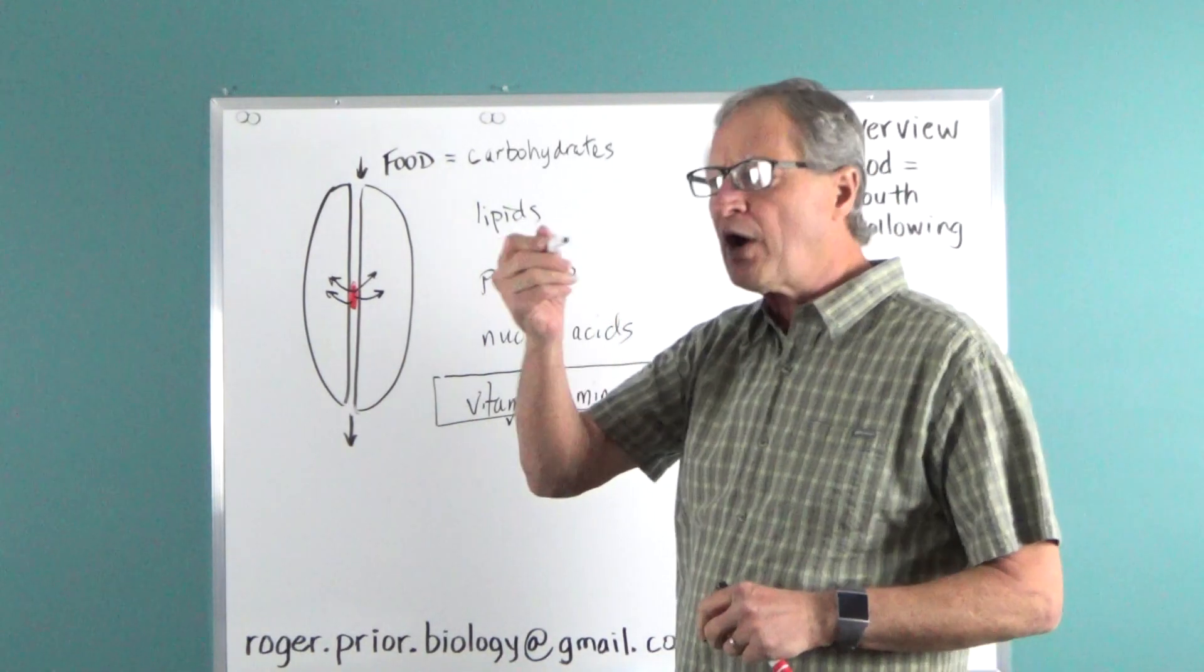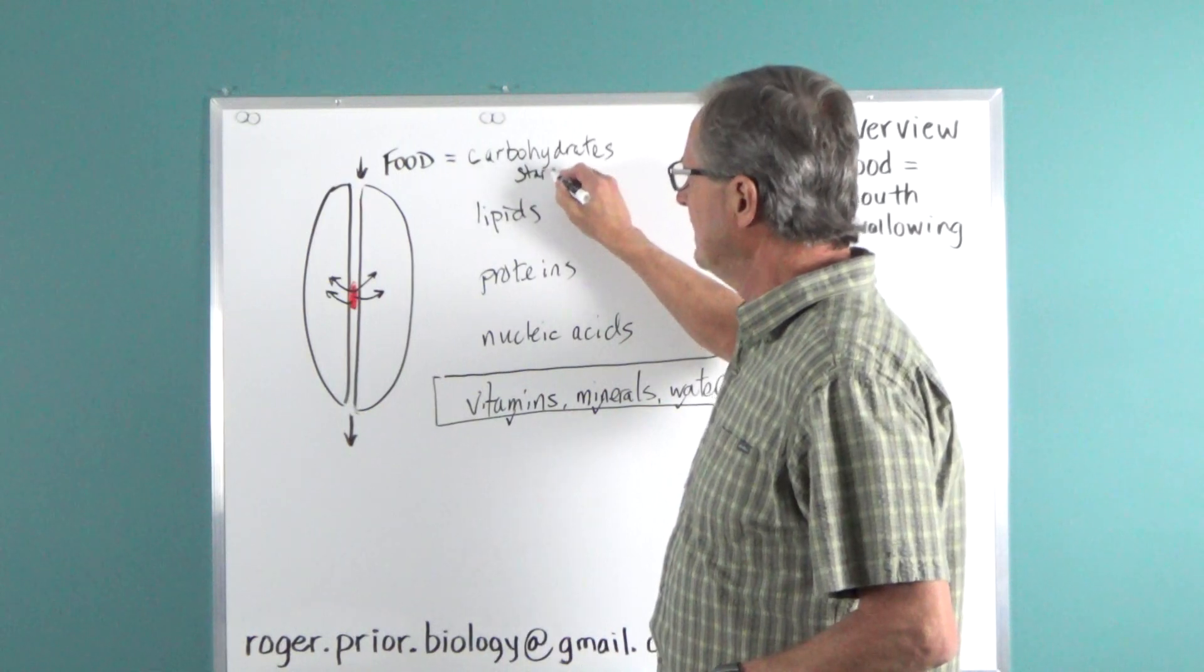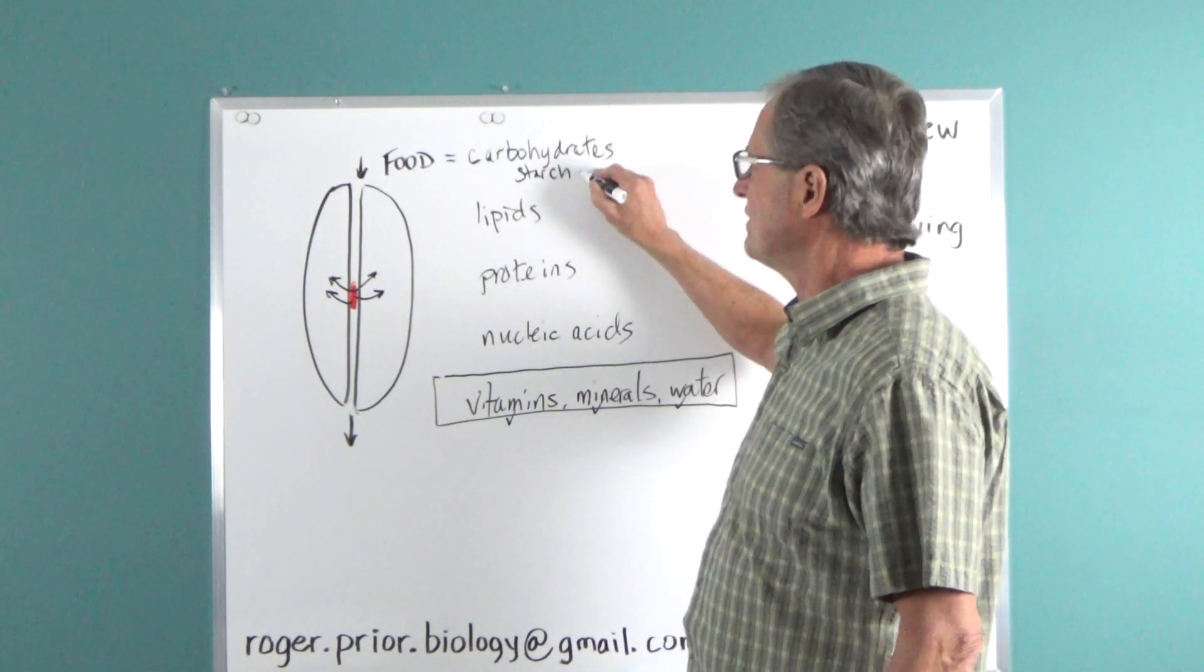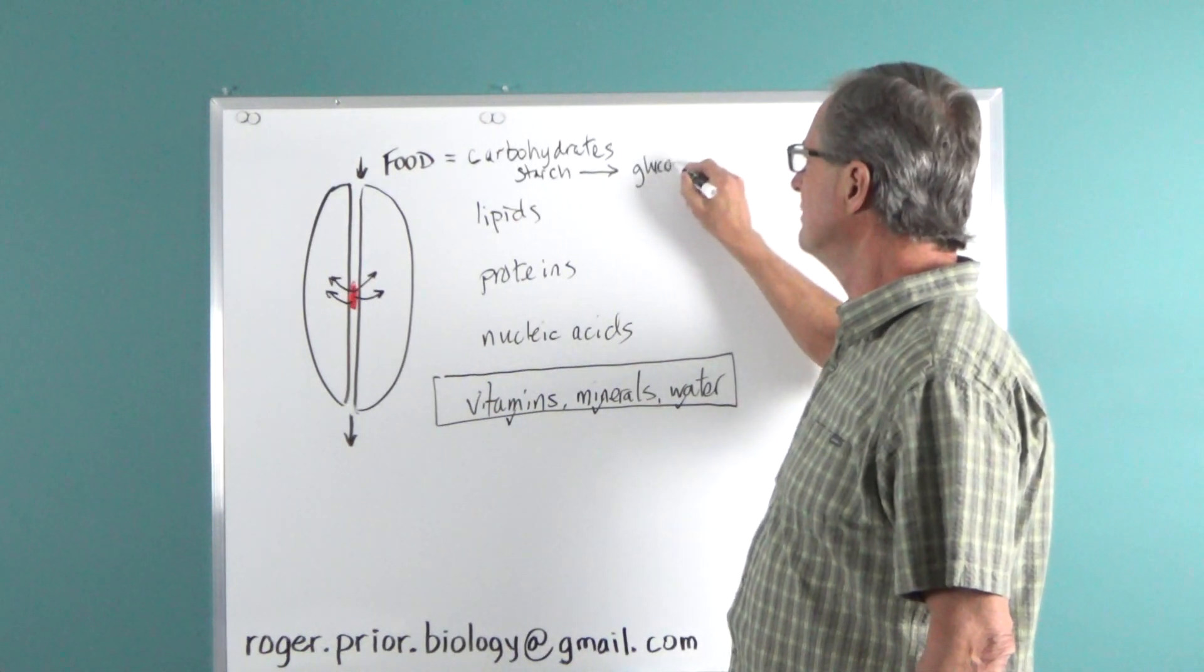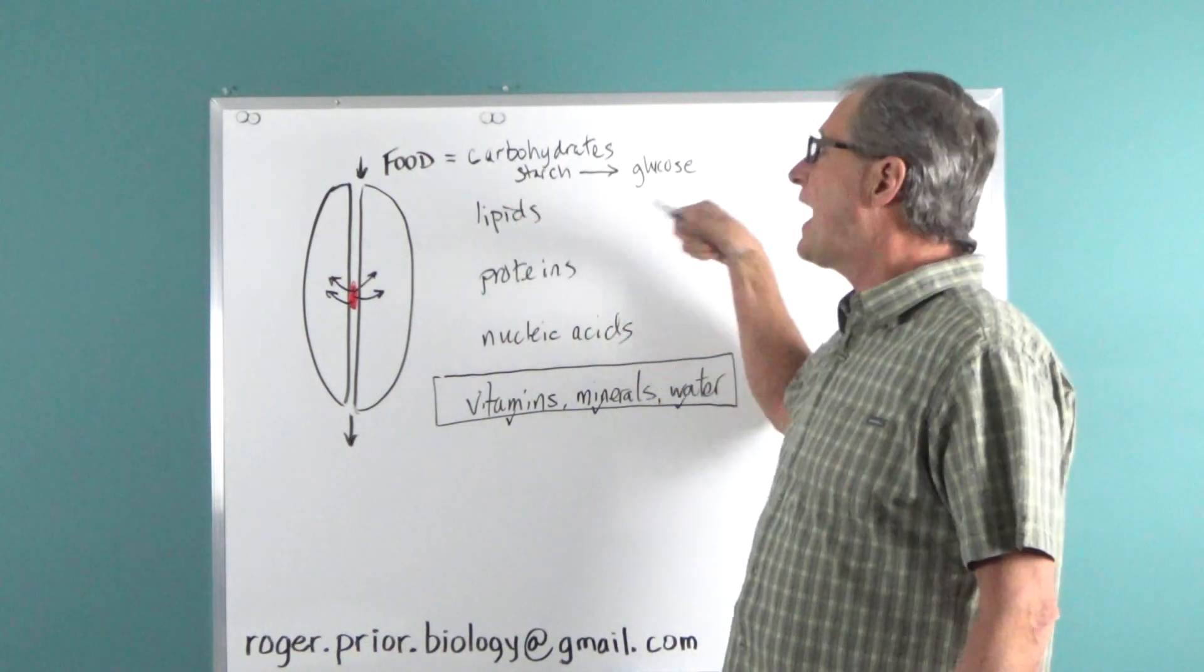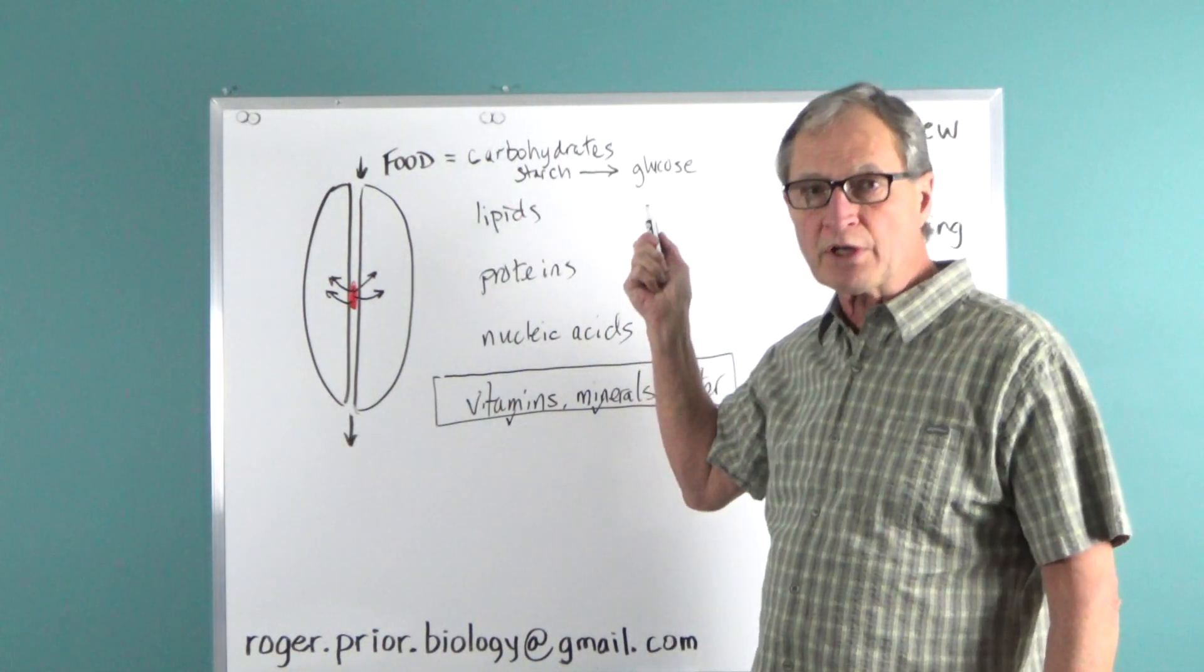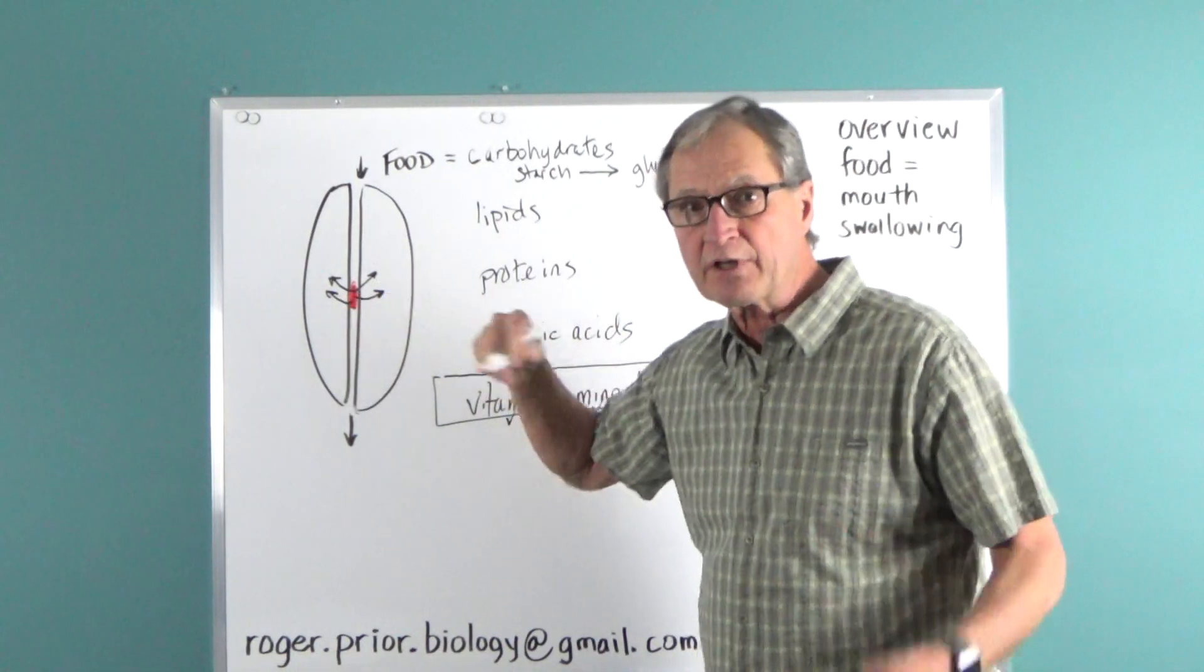We know that carbohydrates, biochemically, we eat starch. Well, starch is just a polymer of glucose. And the digestive system has to take the starch and break it down into glucose molecules, and the glucose can then be absorbed. Glucose is small enough, it can go into cells.